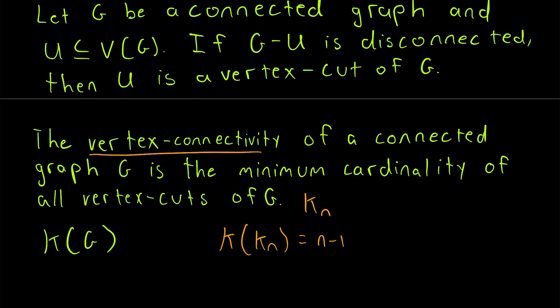So then in general, the vertex connectivity of a connected graph G is the minimum cardinality of all subsets U of the vertex set. So it's the minimum cardinality of all such sets such that G minus U is either disconnected or trivial. So again, in more general terms, adapting this definition to include how we define connectivity for complete graphs,